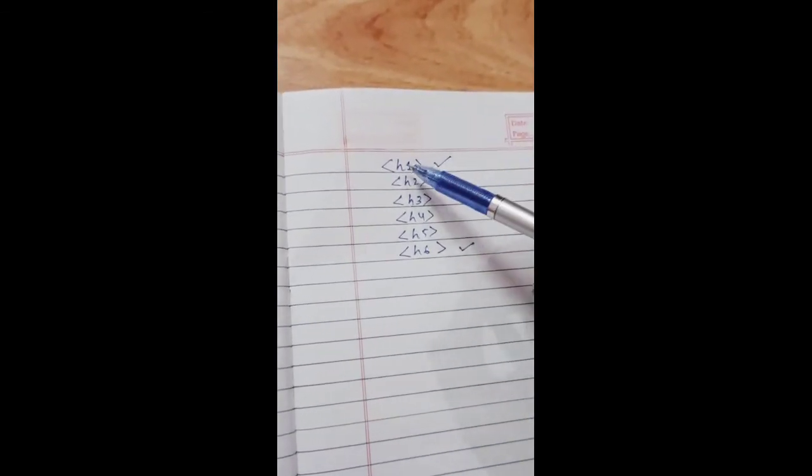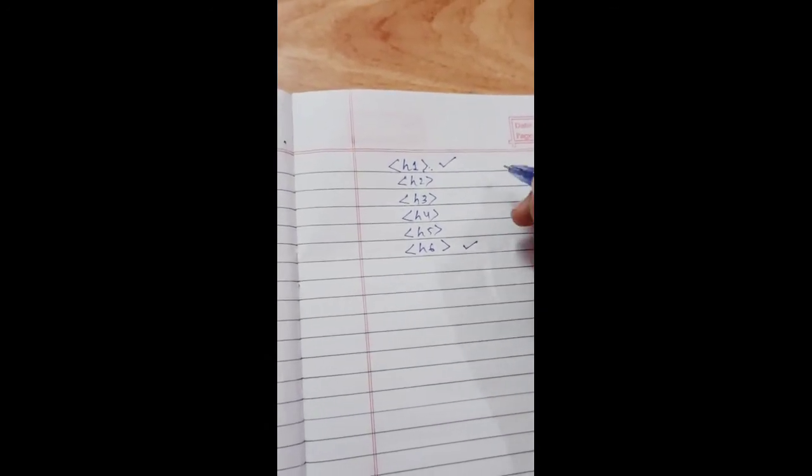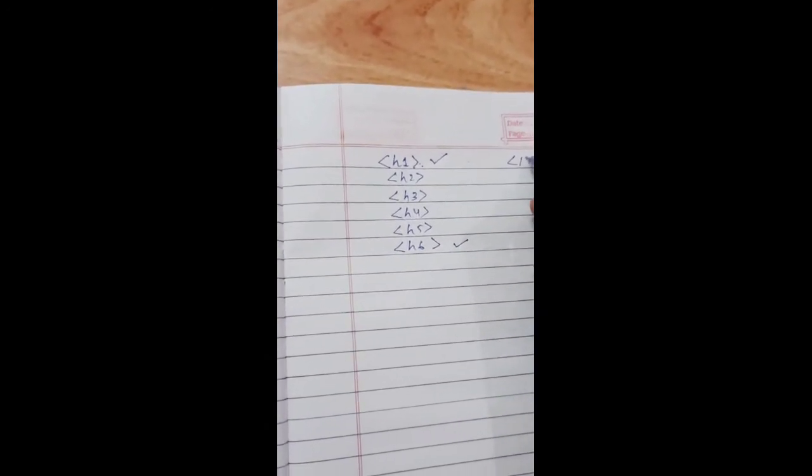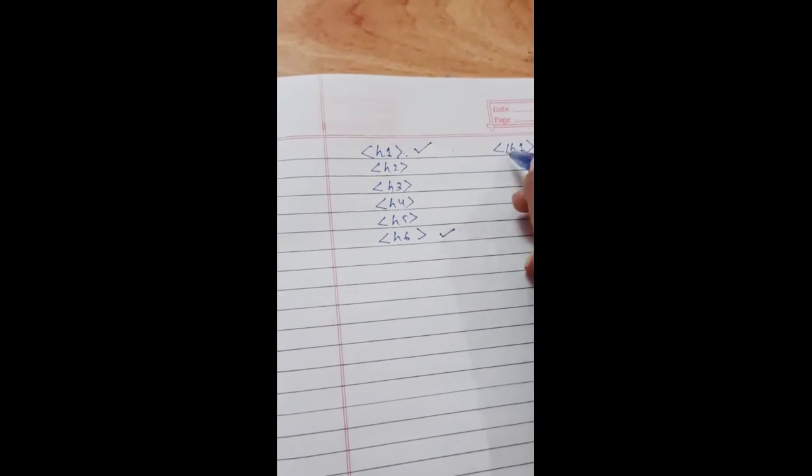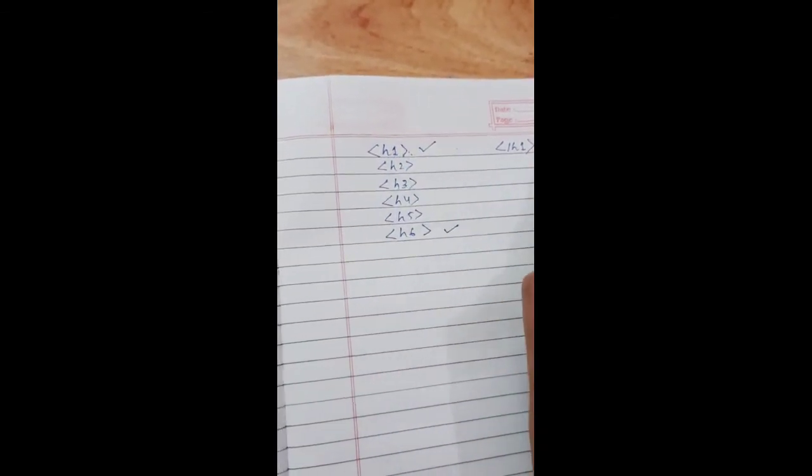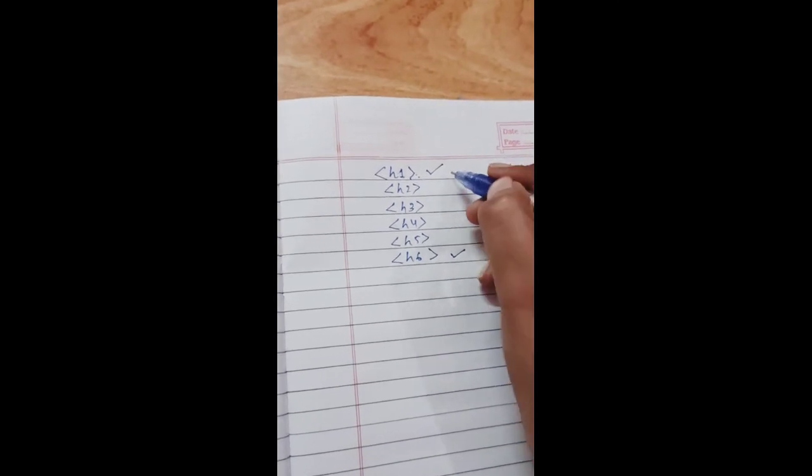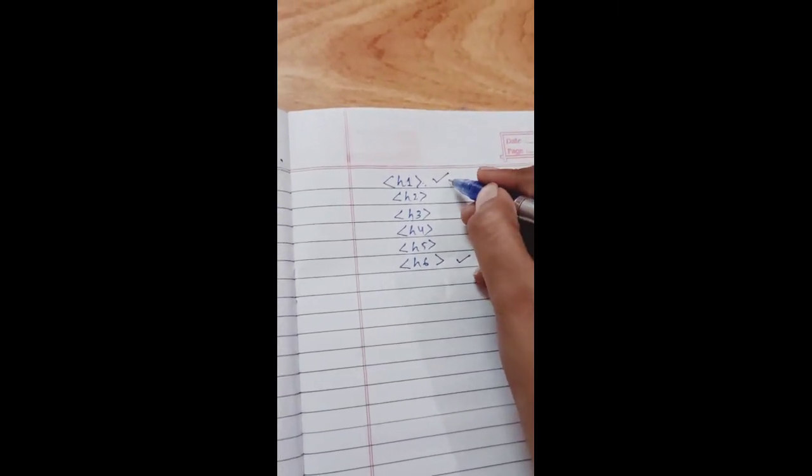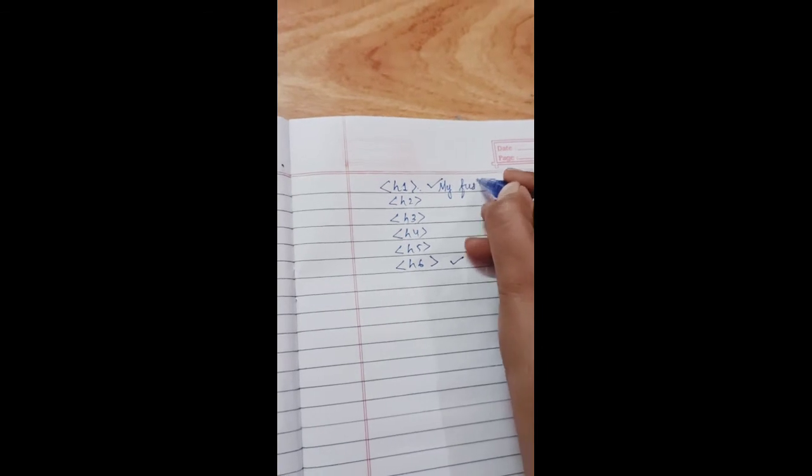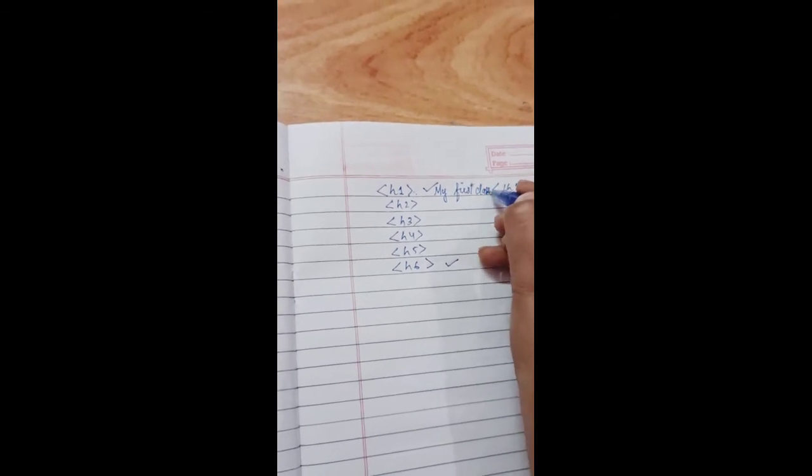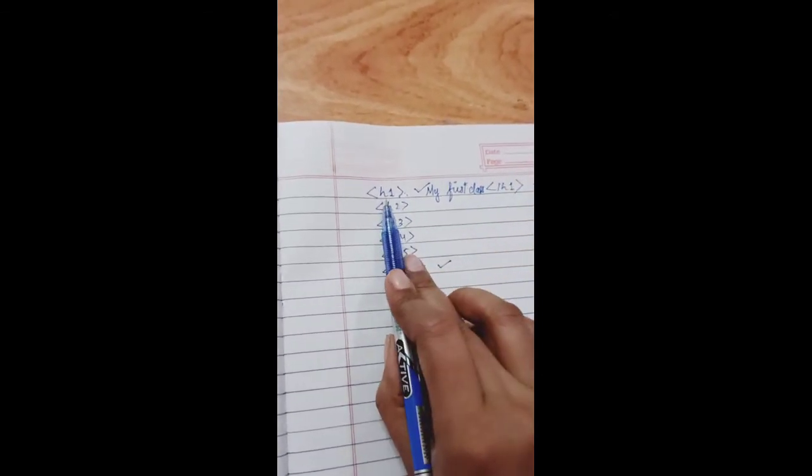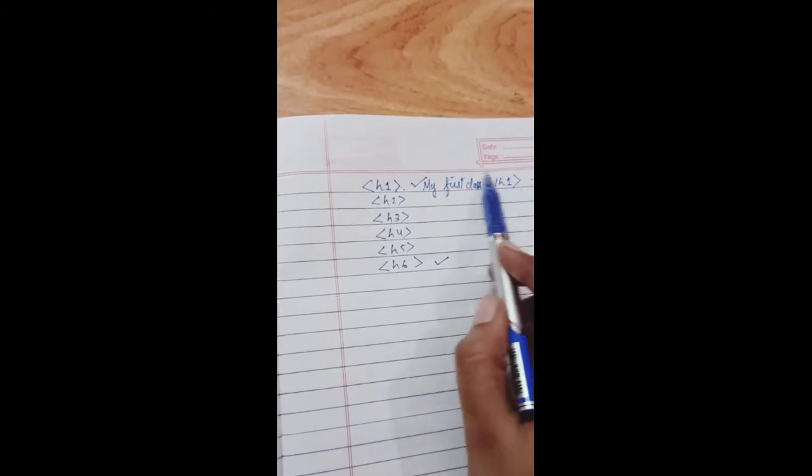It is a container tag because it has an ending tag. Suppose if you start with H1, then you will end with backslash H1. So it is a container tag. Suppose you are giving here a heading 'My First Class', so this is your heading. Here is the opening tag and here is the closing tag. So this is a container tag. So heading tag is a container tag.